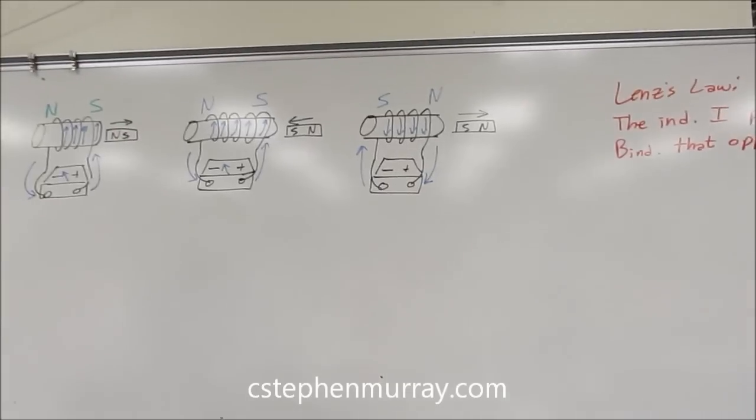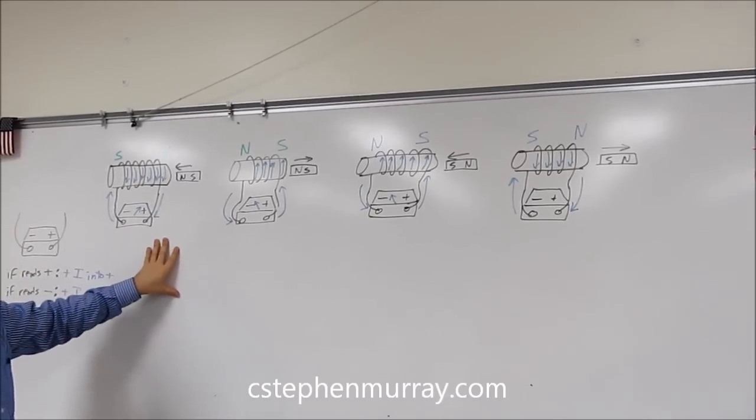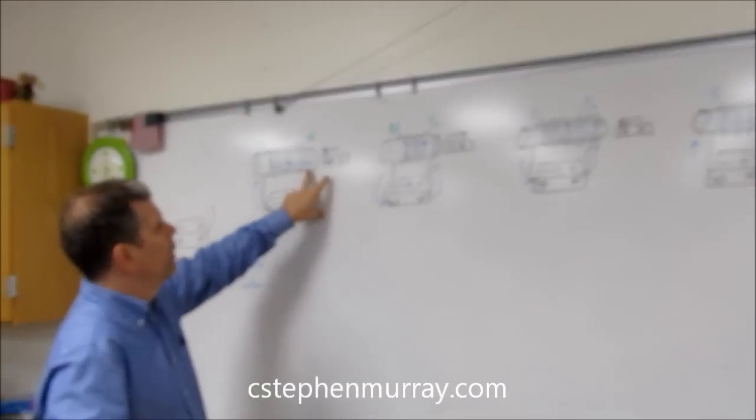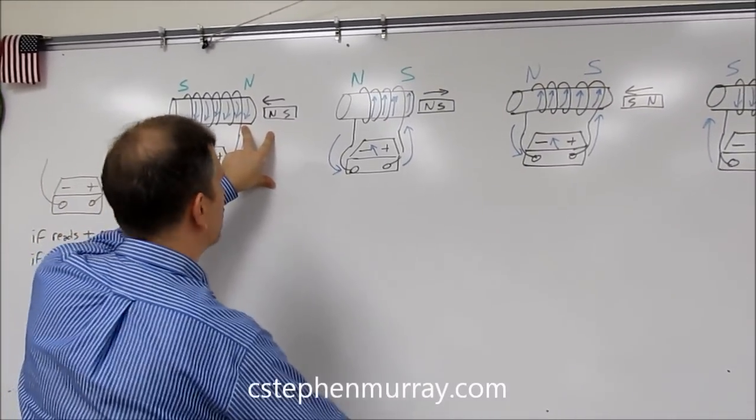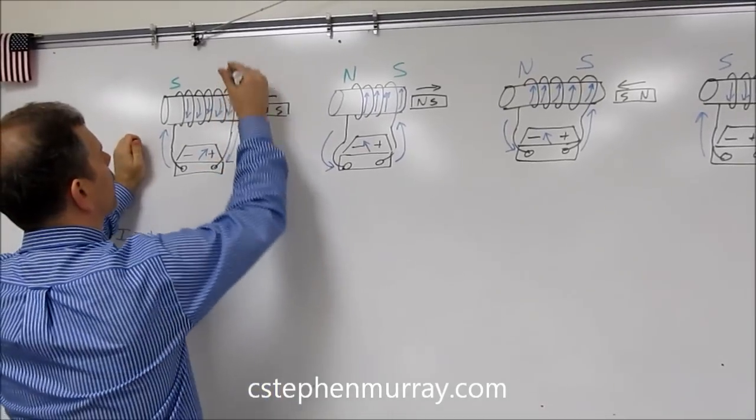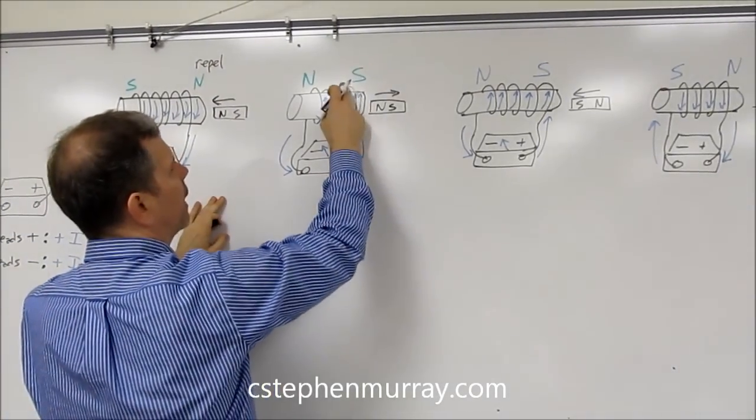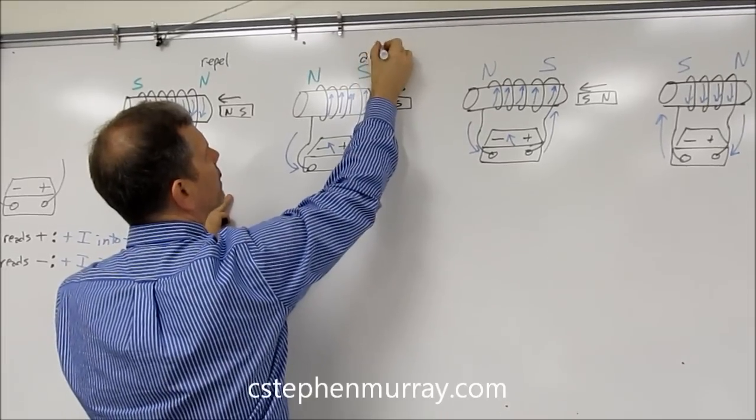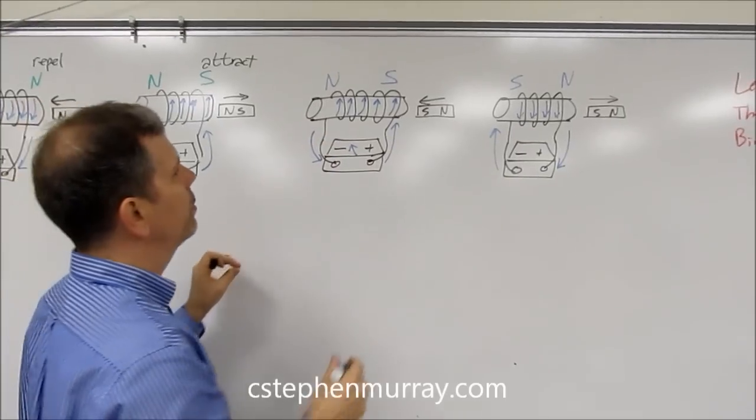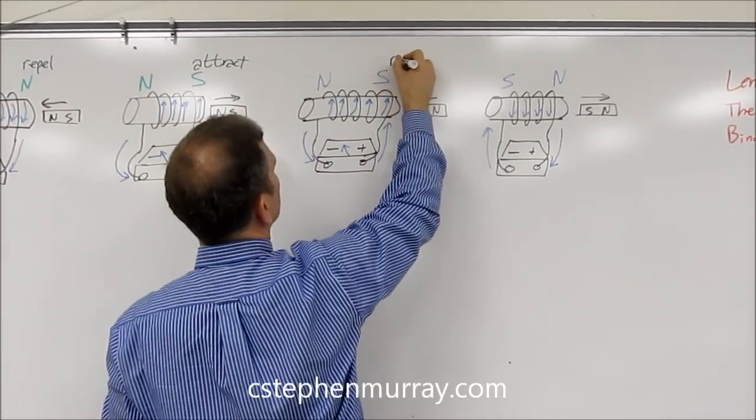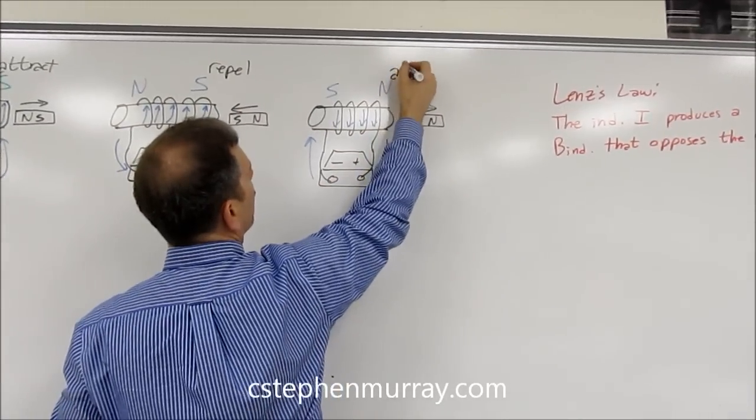Now, we take a look at something very curious. Let's start again on our first situation over on the left hand side. You see that we have two north poles here, and two north poles will repel. Here, we see a north and a south will attract. Two south poles will repel. A north and a south will attract.